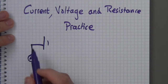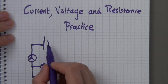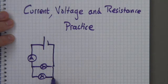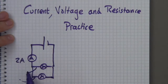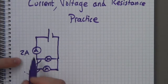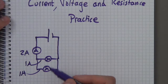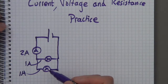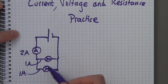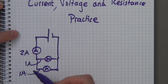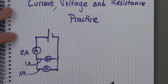Starting with the easy one: if this ammeter reads two amps, what would be the amps going to each of these bulbs? It would be one amp and one amp, because if these bulbs are the same size, same make, bought at the same time, they have the same resistance. The current sees both as equal resistors and doesn't decide one lamp is easier than the other.